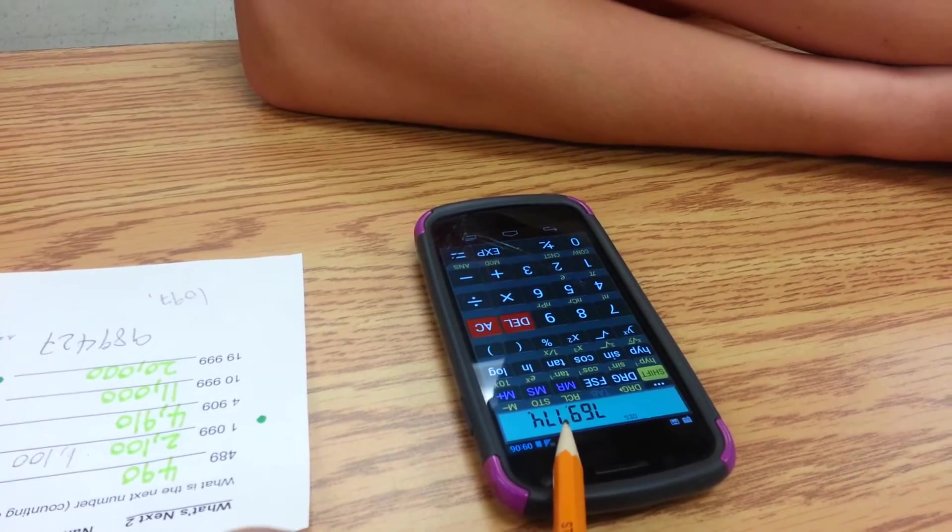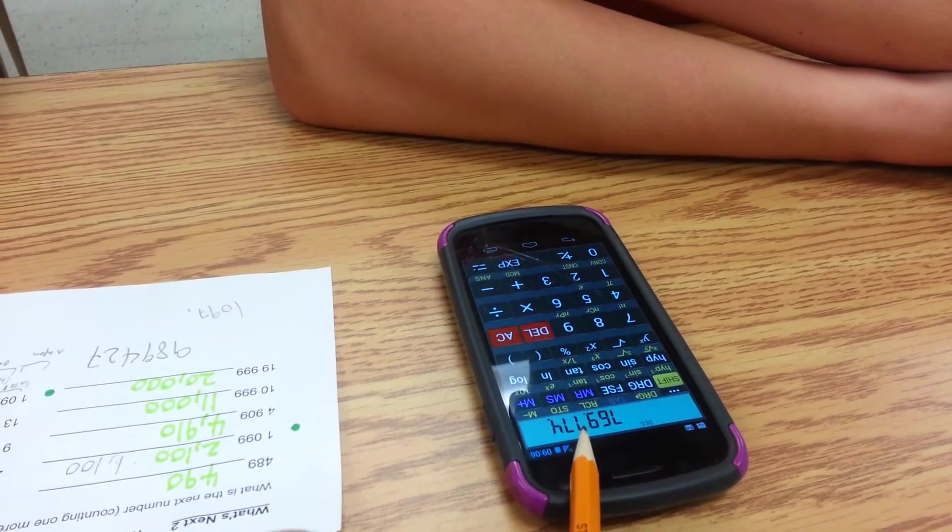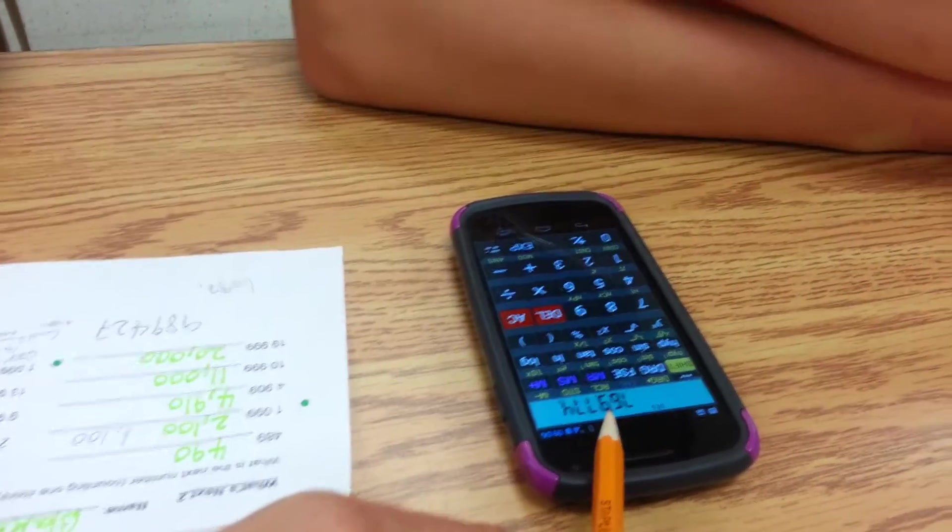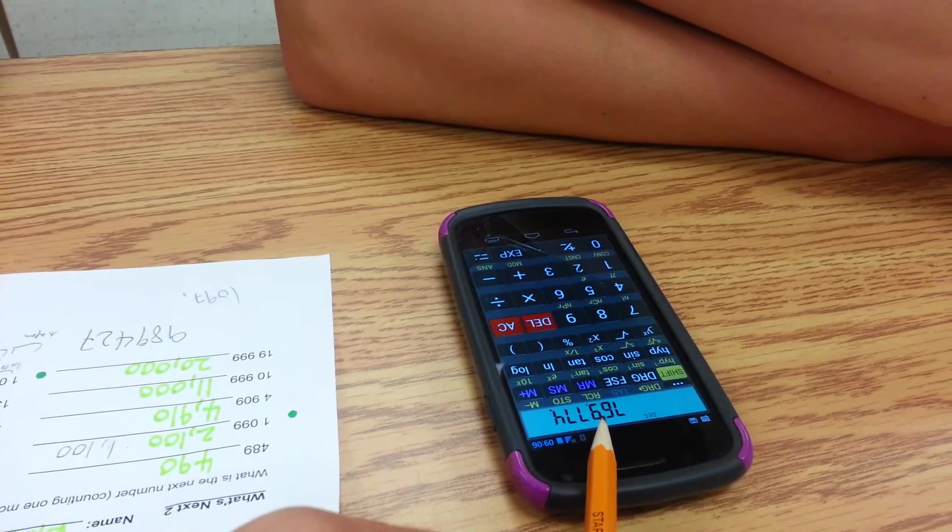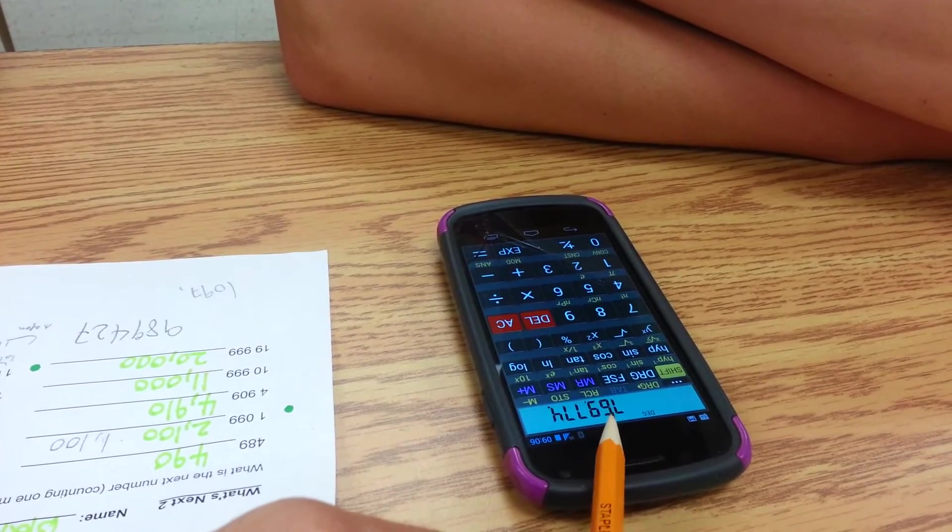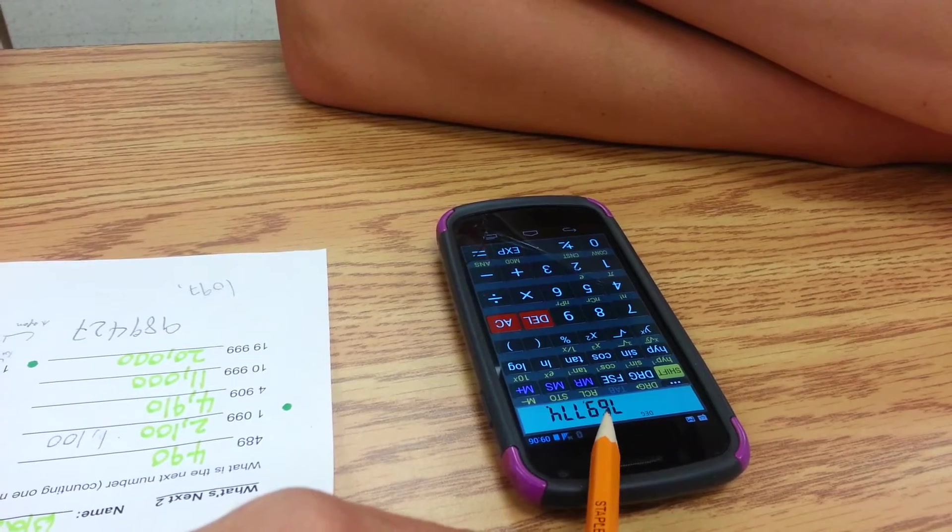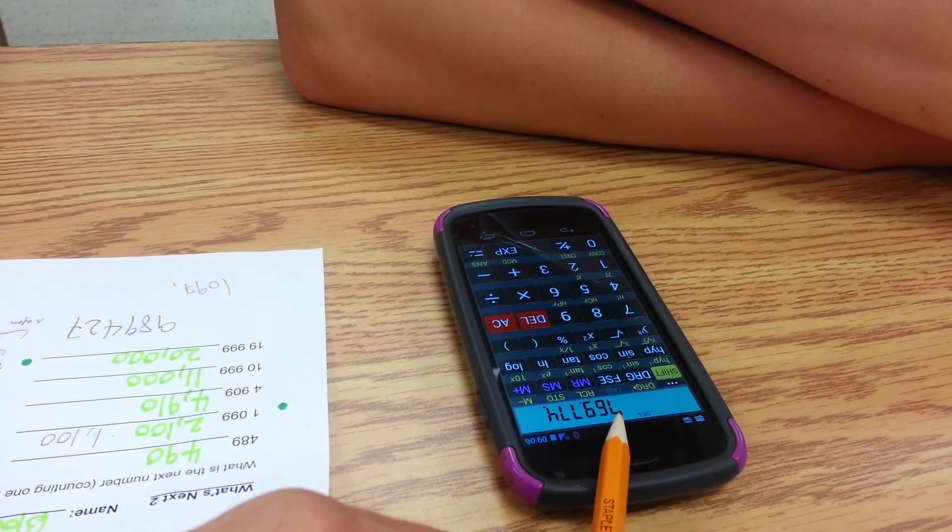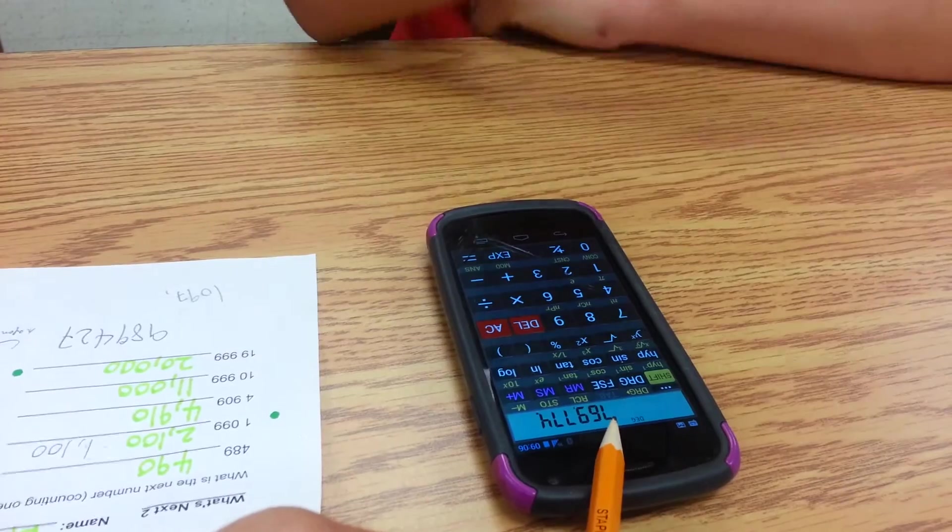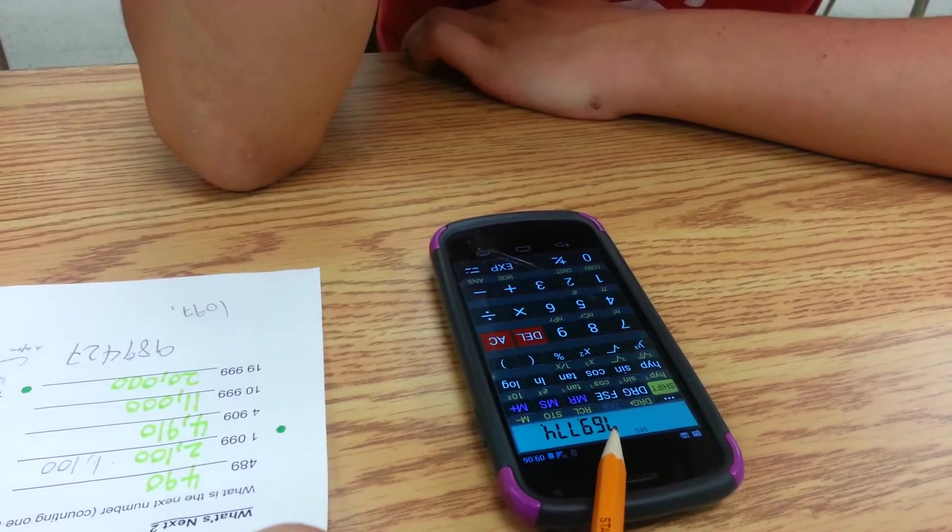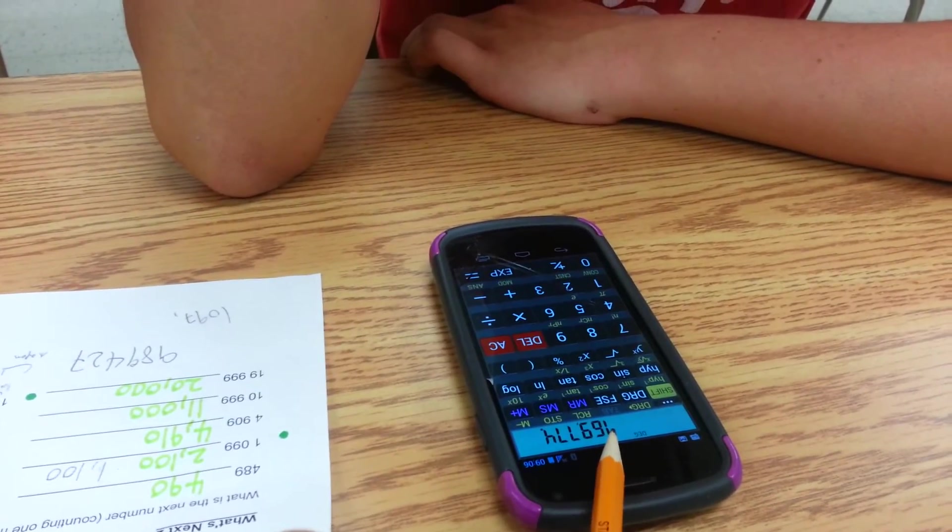7 of them, which makes... 700. 700. And what's that one? 9,000. 9,000. 9,000. And then this one? 60,000. 6, 10,000. 60,000. And what's that one? 7... 7... 70,000? 700,000. 700,000. Yeah.